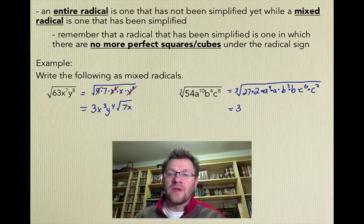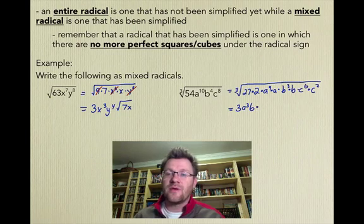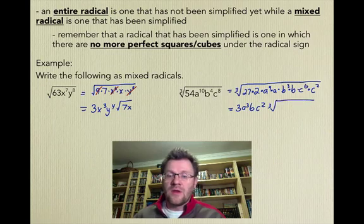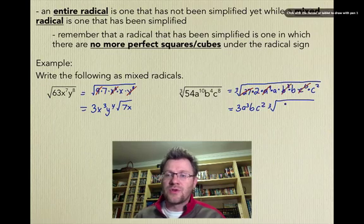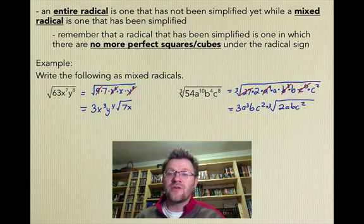The cube root of 27 is 3. Cube root of a^9 is a^3. Cube root of b^3 is just b. And the cube root of c^6 is c^2. And what we have left is 2ab and c^2 underneath that root sign.